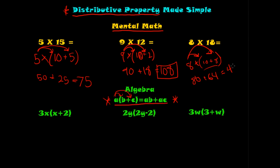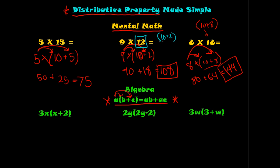Add them together and you get 144. So that's a kind of reverse distributive property — it's still a times (b plus c), except b plus c is written as 18. We write it back into the form b plus c as 10 plus 8. Similarly, 12 breaks back up into 10 plus 2 with 9 outside, and you distribute that 9 back through.